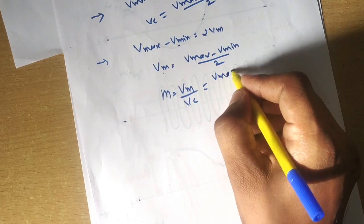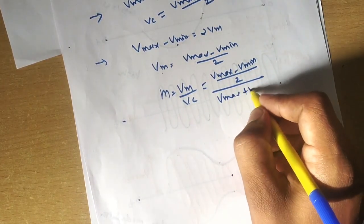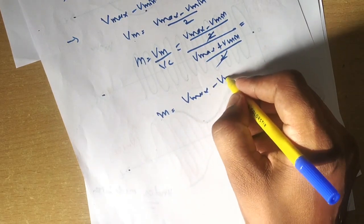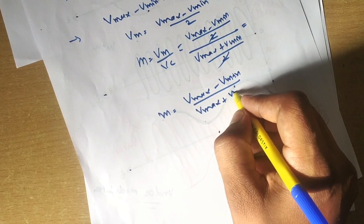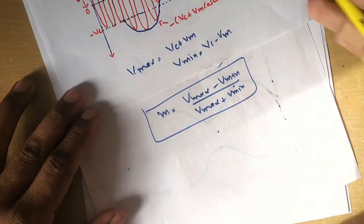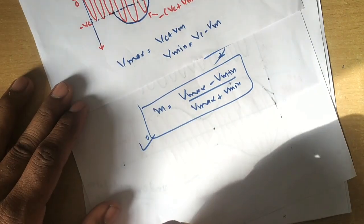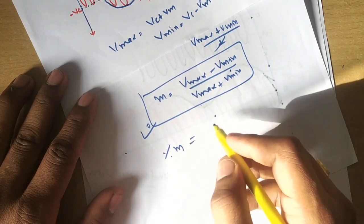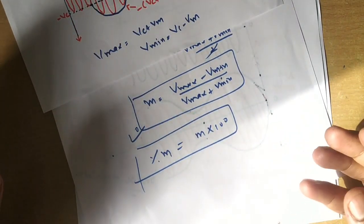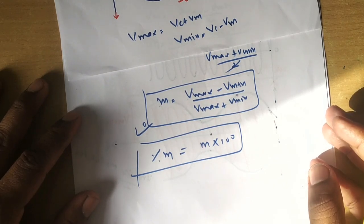Since modulation index m = Vm/Vc, substituting our derived expressions gives m = (V_max − V_min)/2 divided by (V_max + V_min)/2, which simplifies to m = (V_max − V_min)/(V_max + V_min). From the time domain representation you can identify V_max and V_min and calculate the modulation index. Multiplying by 100 gives the percentage modulation. In the next lecture we will derive the frequency domain representation of the AM wave.